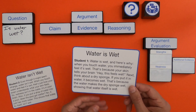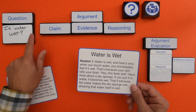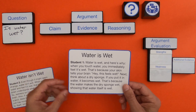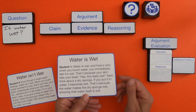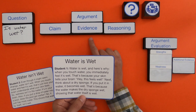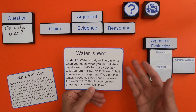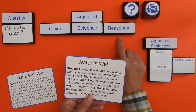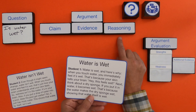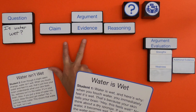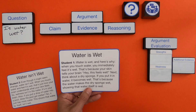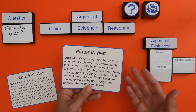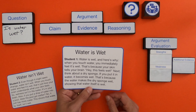A claim is just an answer to the question — once we find the answer to the question, we write that down. Evidence is going to be things like facts, observations, or noticings that a student might have. And then the reasoning is a logical connection between the two. Some words you might see are 'because,' 'it's apparent,' or 'this shows' — that's when they're using reasoning.